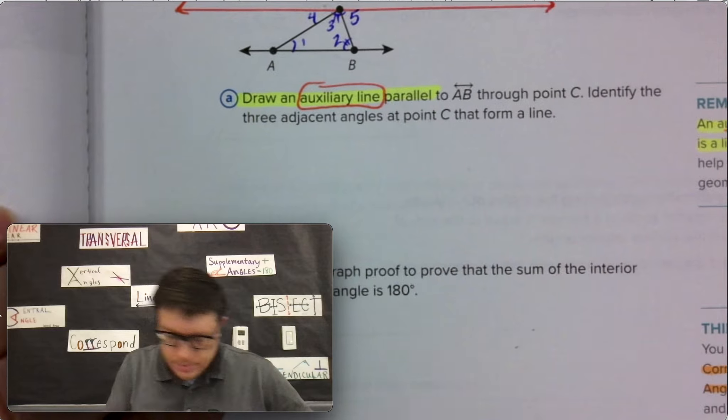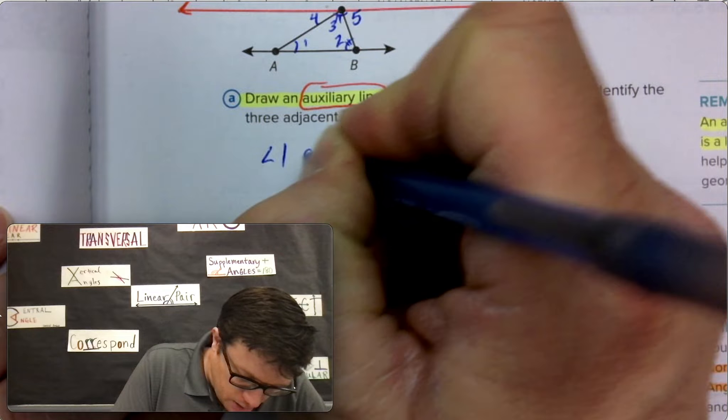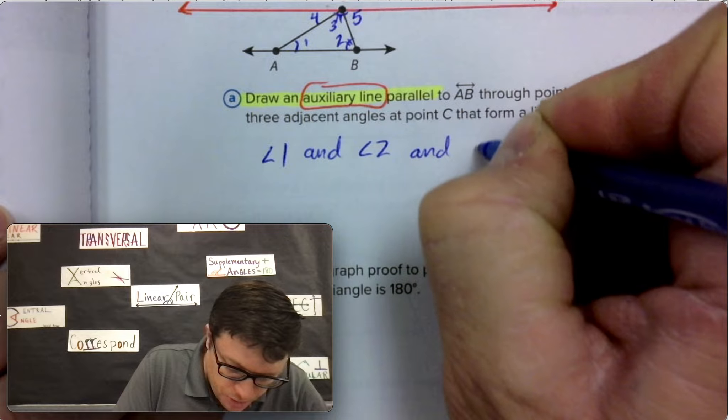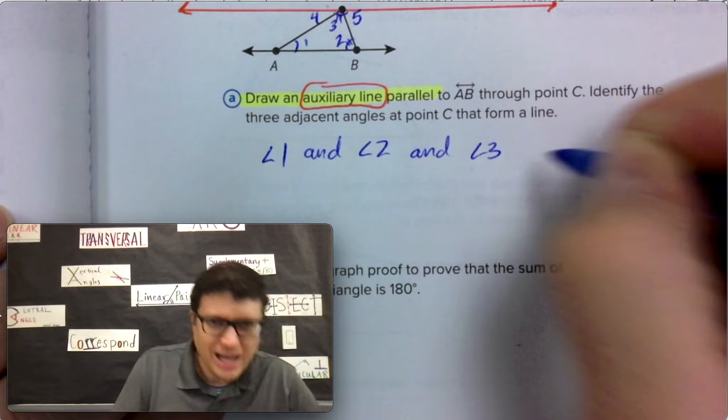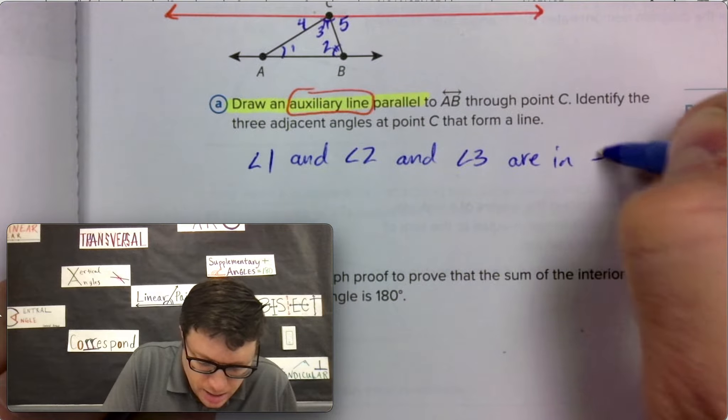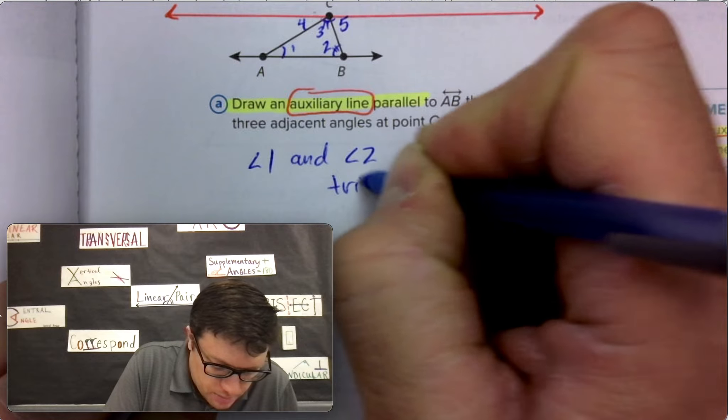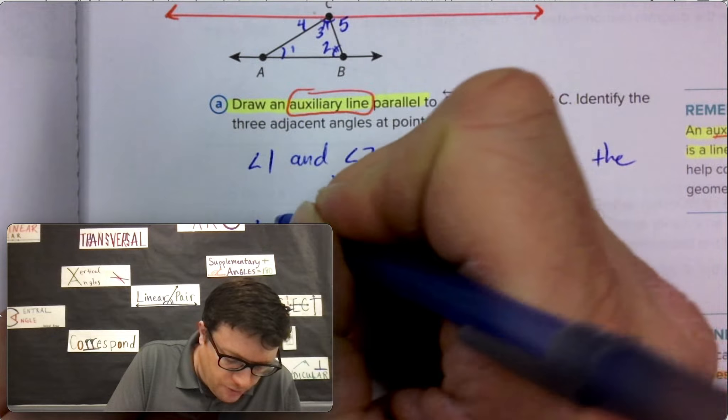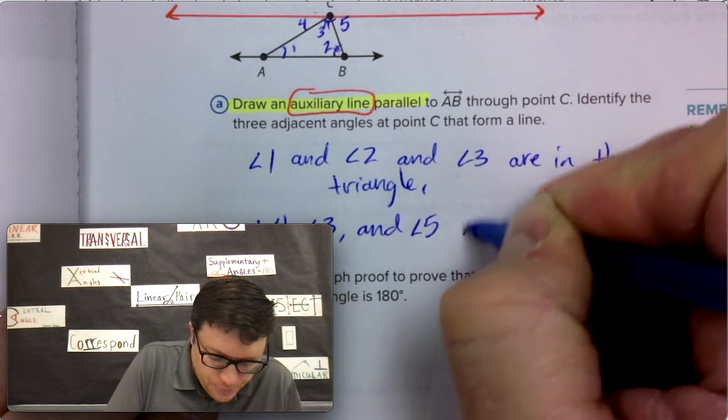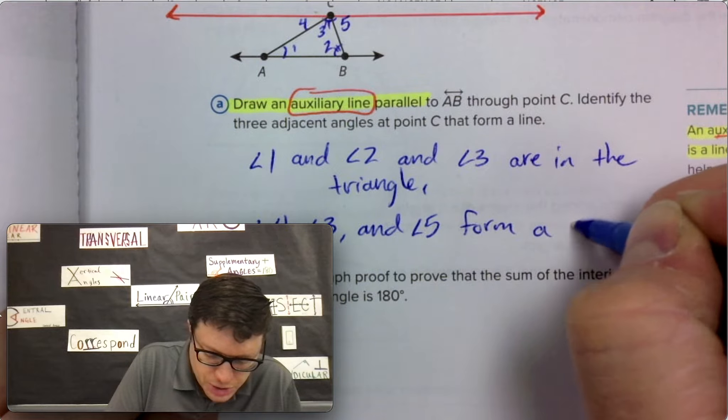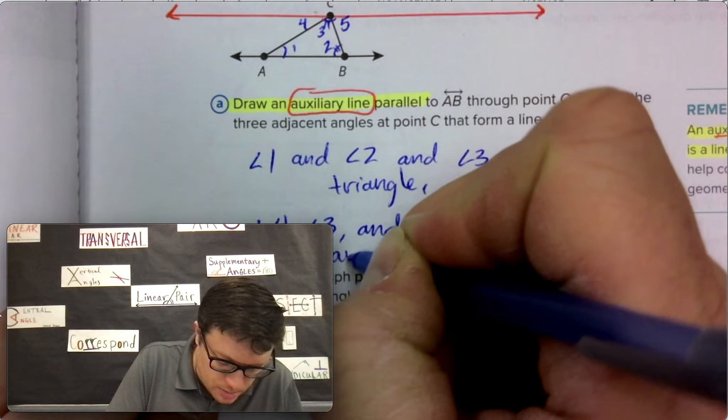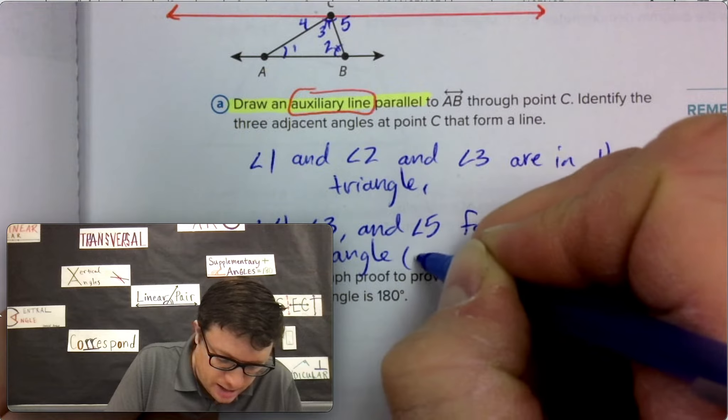We will say angle one and angle two and angle three, those are the angles in the triangle. But angle four, angle three and angle five form a straight angle, a line.